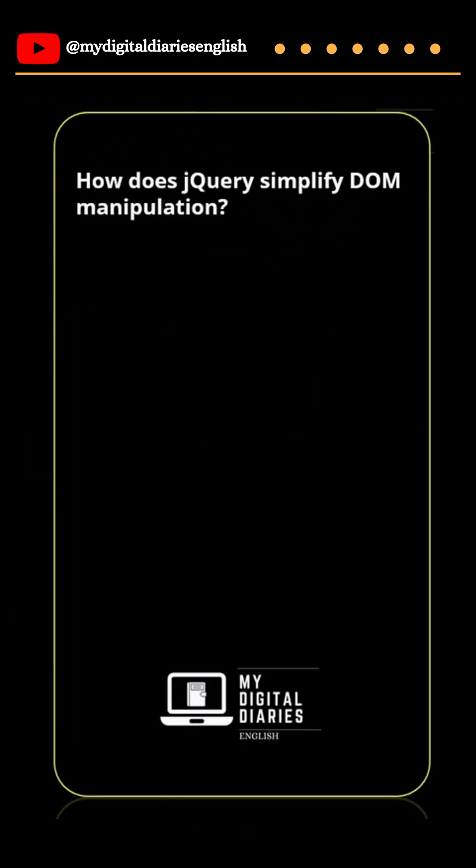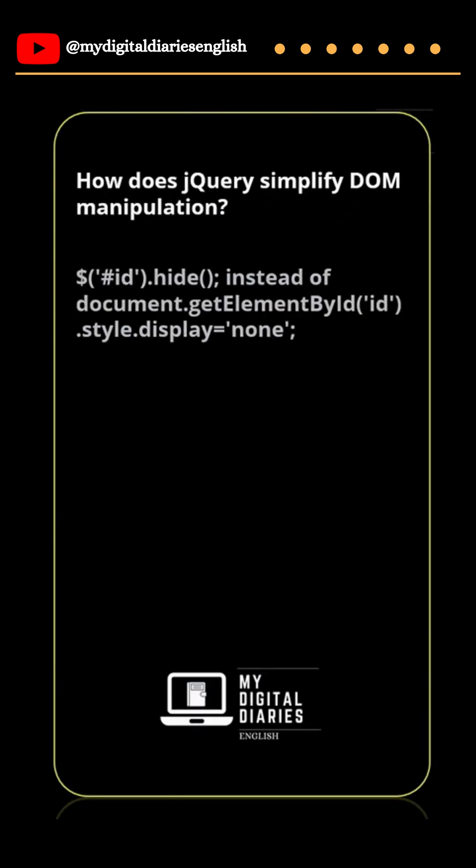How does jQuery simplify DOM manipulation? jQuery simply uses `$('#elementId').hide()` — a simple way to hide an element. In plain vanilla JavaScript, you have to use `document.getElementById('id').style.display = 'none'`.